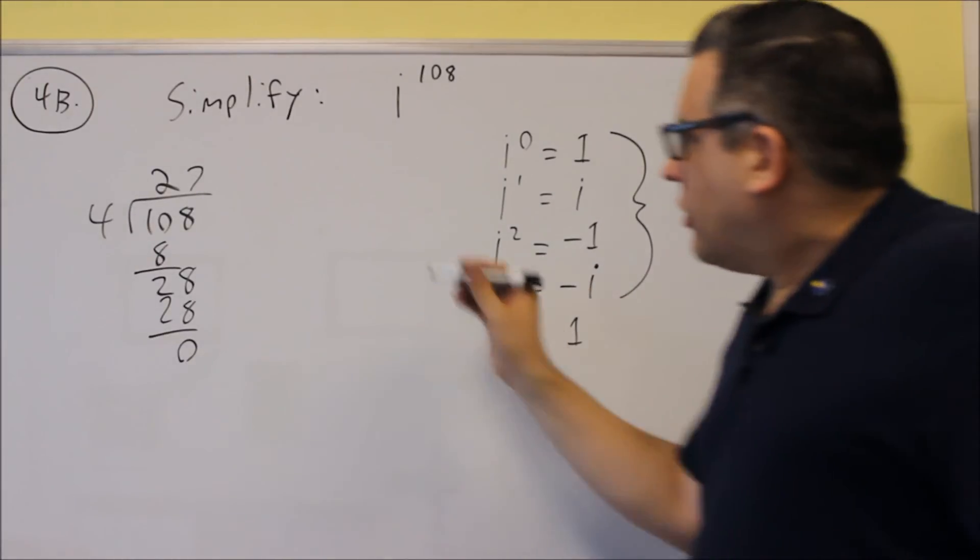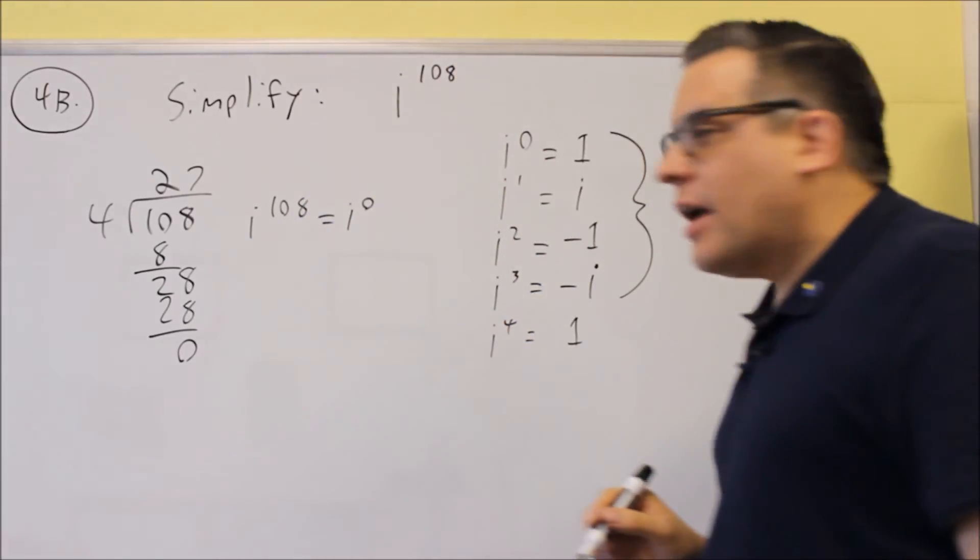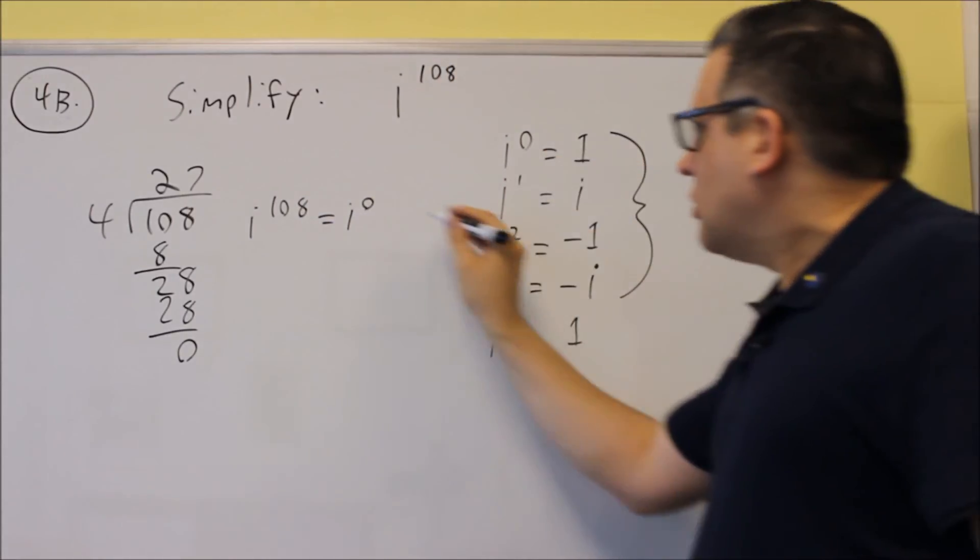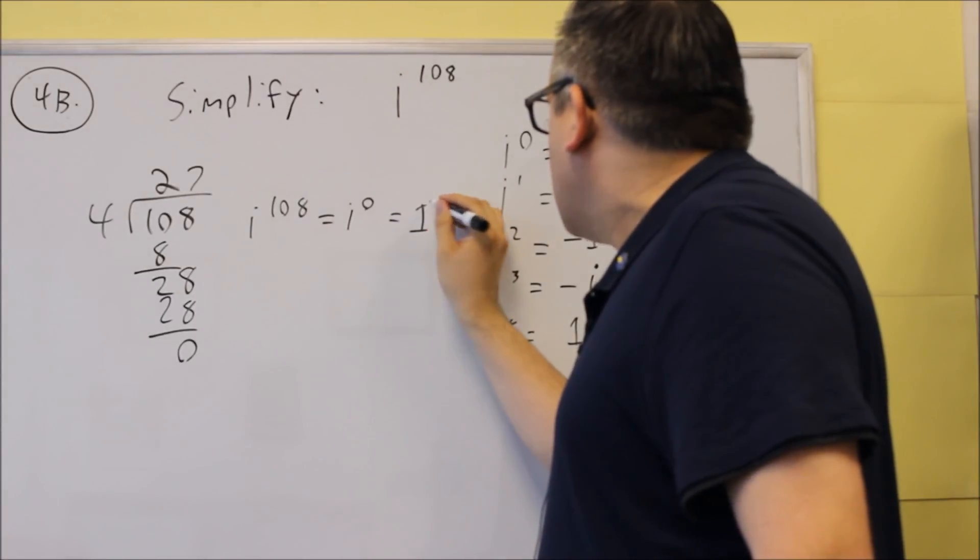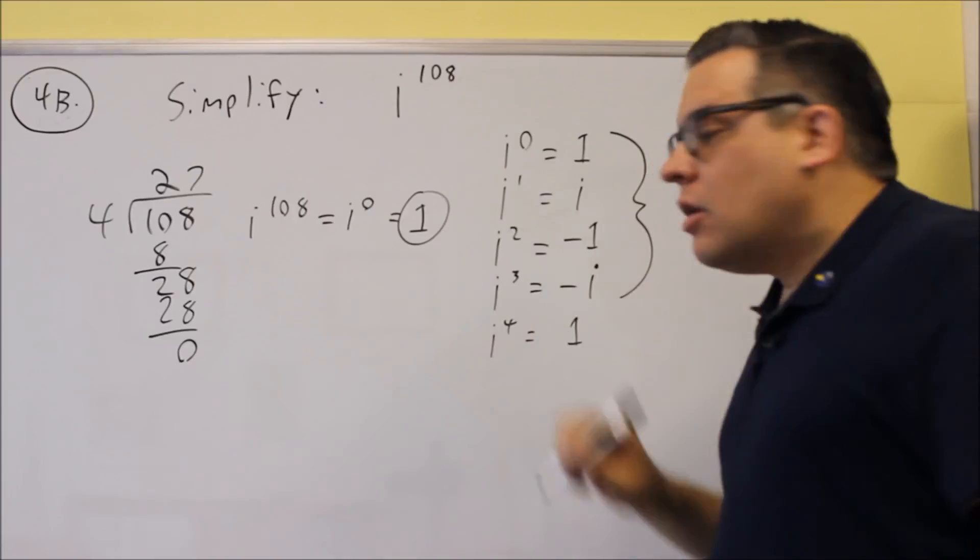Now, that means that i to the 108 is the same thing as i to the 0. But from our list, we see that i to the 0 is equal to 1. So you would put 1 down as your final answer on this one.